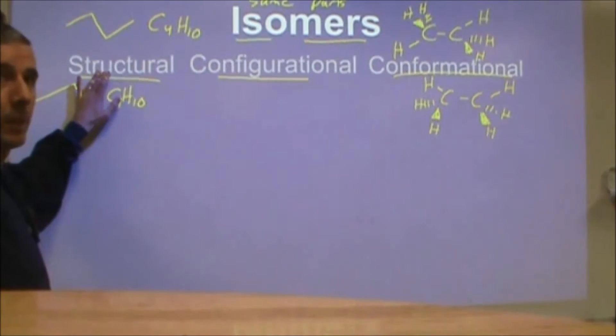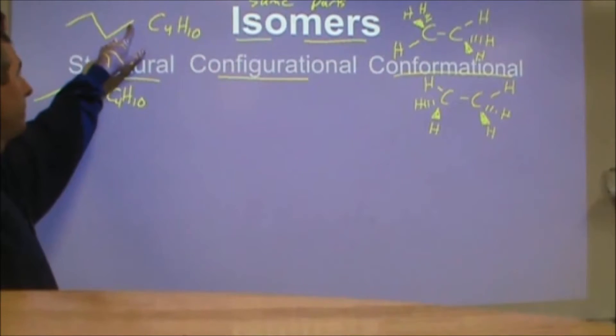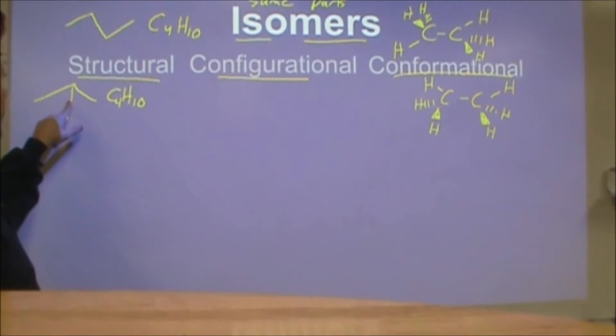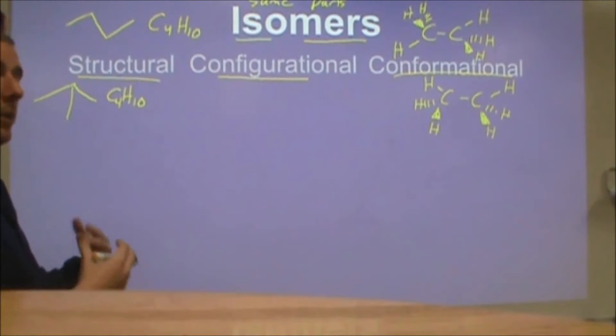Structural isomers are actually connected differently. Here is C4H10, this is butane. And then this is C4H10, that's methyl propane. Those are two completely different chemicals but they're both composed of four carbons and ten hydrogens, so the same molar mass.